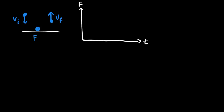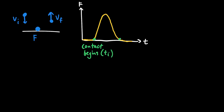If we make a graph of the force F acting on the ball as a function of time T, the graph might look something like this: it's zero for a while, then the force increases as the ball makes contact with the floor, then it decreases. It settles back to zero once the ball has left the floor. This point where the force starts is where contact begins, and maybe that happens at a time t-initial.